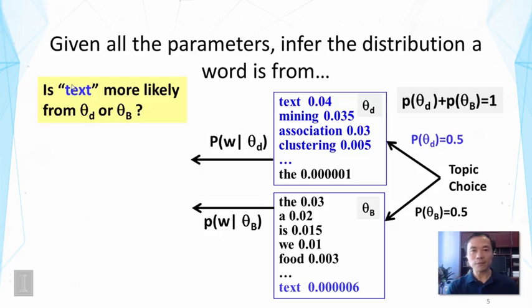This inference process is a typical Bayesian inference situation where we have some prior about these two distributions. Can you see what is our prior here? The prior here is the probability of each distribution, right? The prior is given by these two probabilities. In this case, the prior is saying that each model is equally likely.